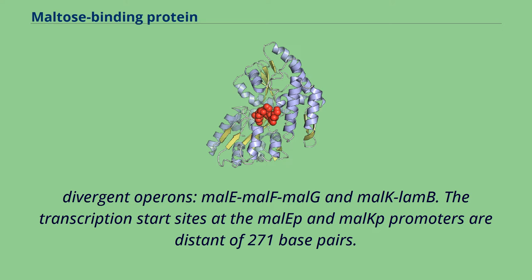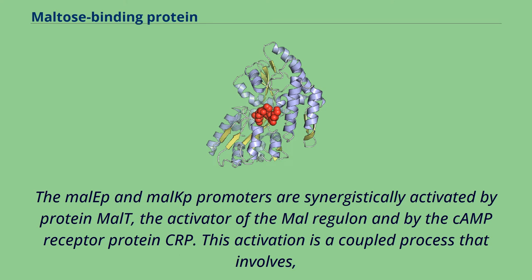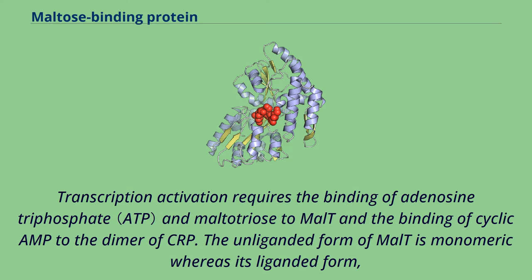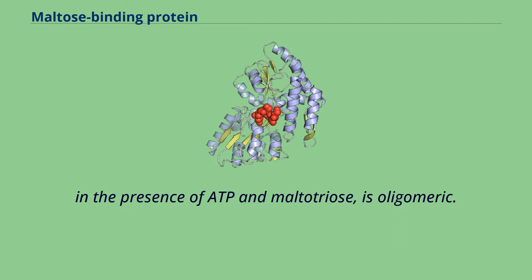The transcription start sites at the malEP and malKP promoters are distant by 271 base pairs. The malEP and malKP promoters are synergistically activated by protein MalT, the activator of the mal regulon, and by the cAMP receptor protein CRP. This activation involves, going from malEP towards malKP, two MalT-binding sites, three CRP-binding sites, and two overlapping sets of three MalT-binding sites staggered by three base pairs. Transcription activation requires the binding of ATP and maltotriose to MalT and the binding of cyclic AMP to the dimer of CRP. The unliganded form of MalT is monomeric whereas its liganded form, in the presence of ATP and maltotriose, is oligomeric.